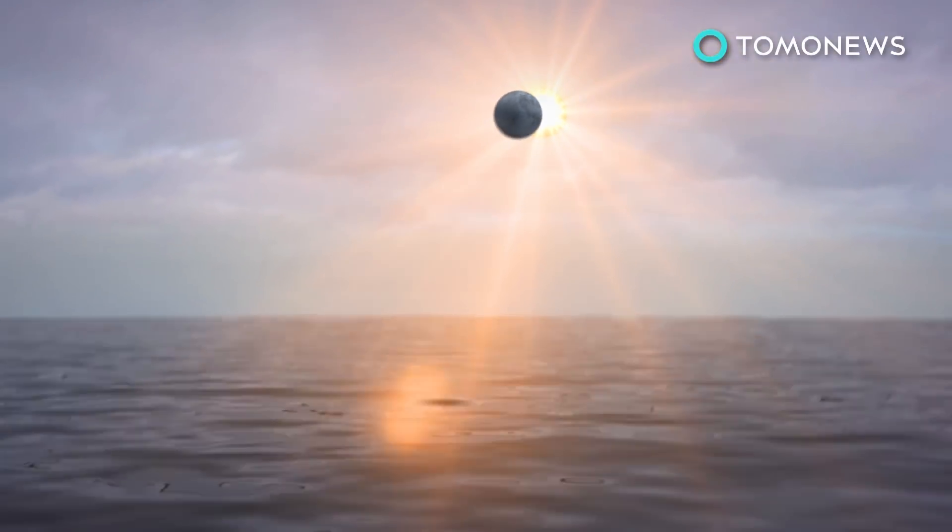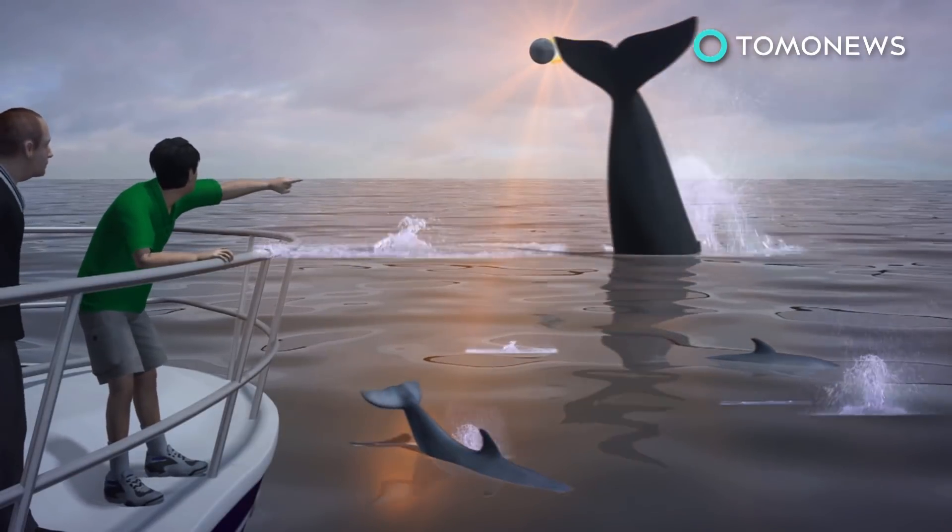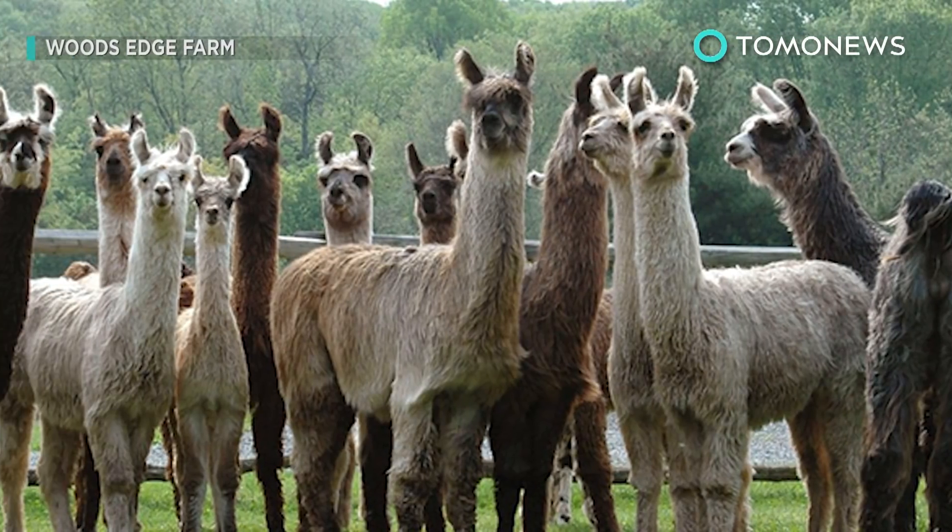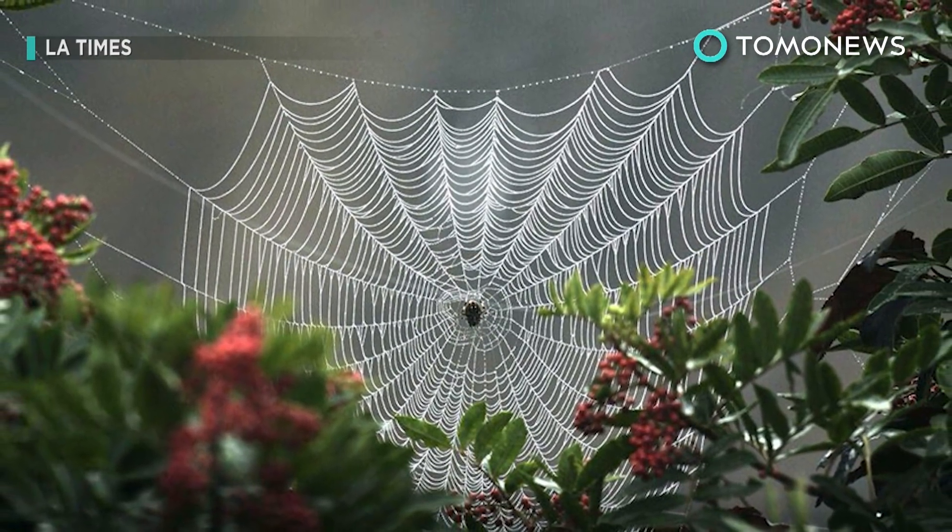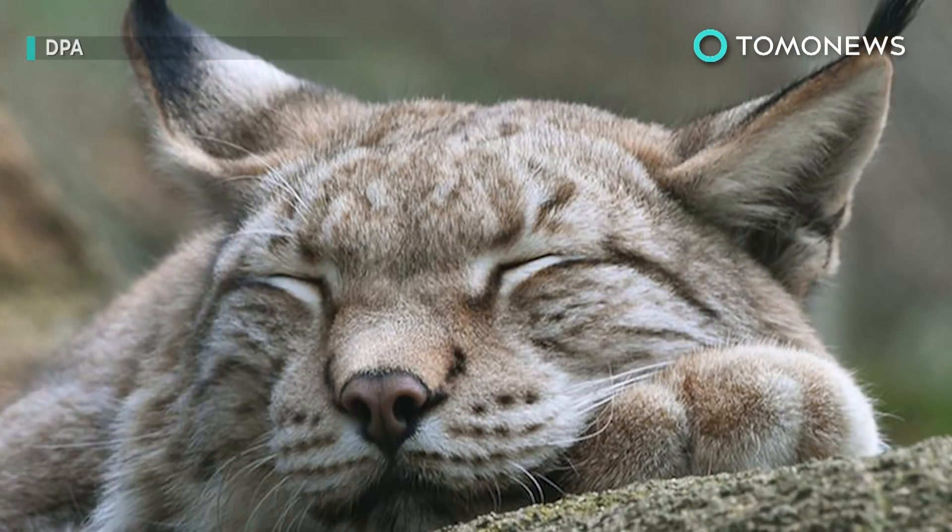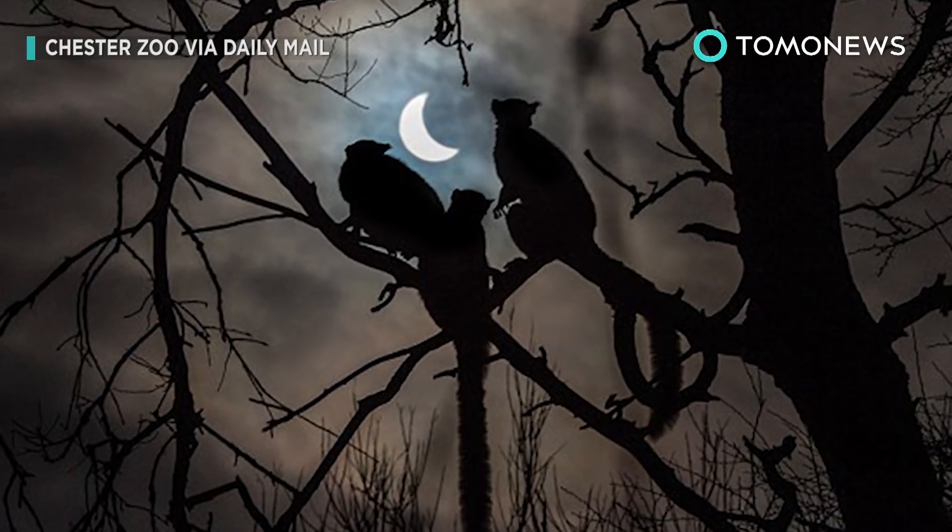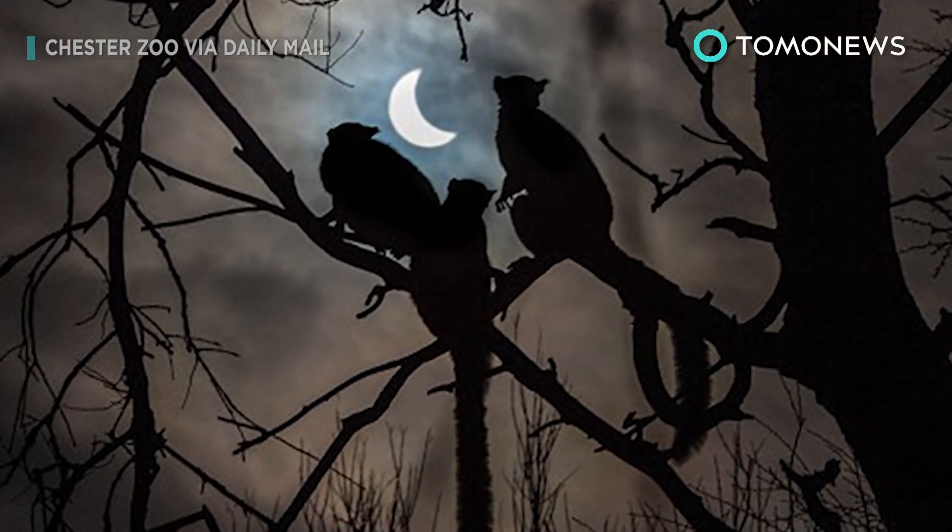Eclipse chasers report seeing dolphins and whales swim to the surface of the ocean five minutes before an eclipse. Meanwhile, others talk of llamas gathering in line to gaze at the sky or of spiders dismantling their own webs. According to scientists, an eclipse can disrupt animals' circadian clocks, convincing some it's time to go to bed, or prompting nocturnal creatures to come out and hunt.